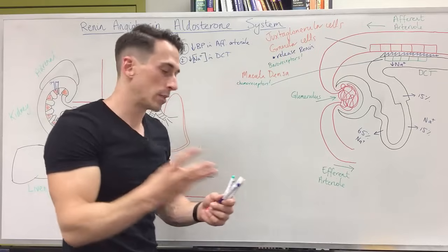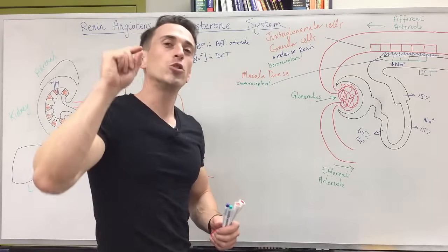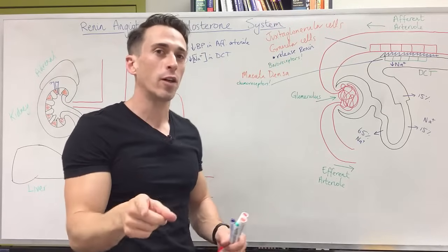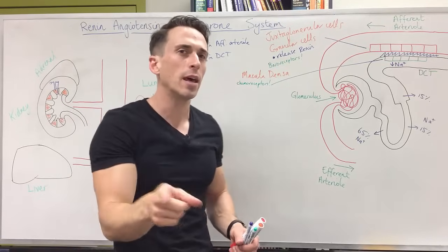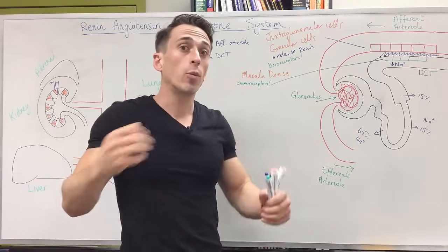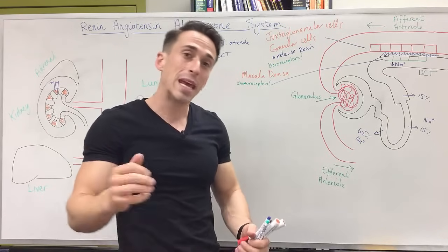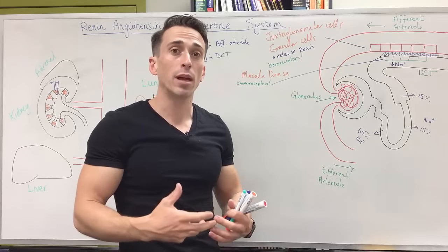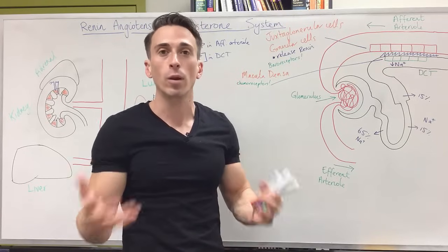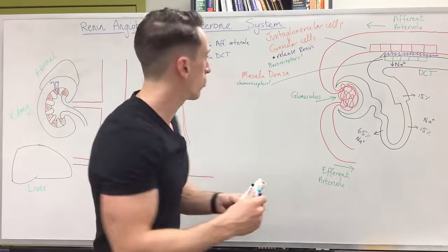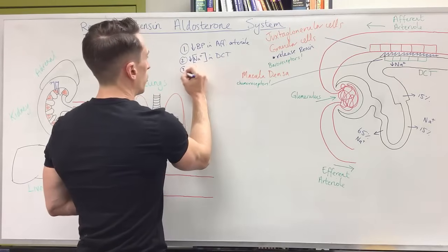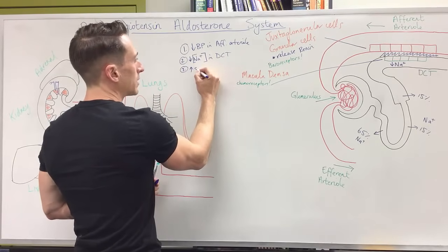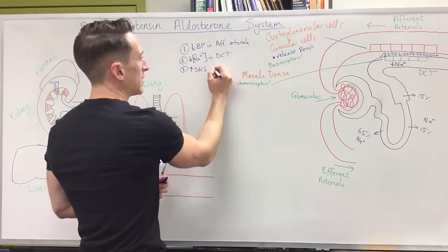There is a third thing that stimulates the release of renin: direct innervation from the sympathetic nervous system — the fight-or-flight system. In times of fight or flight, we want to increase blood pressure so the heart can deliver more blood to the muscles. The third way renin is released is through increased sympathetic nervous system innervation directly stimulating the granular cells.